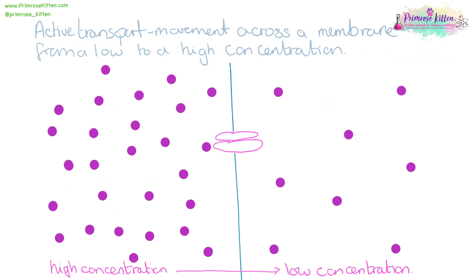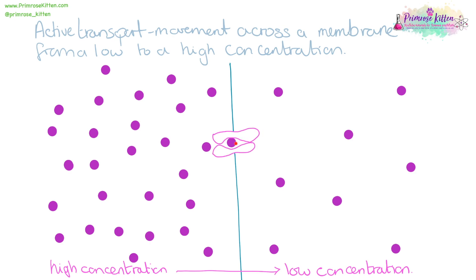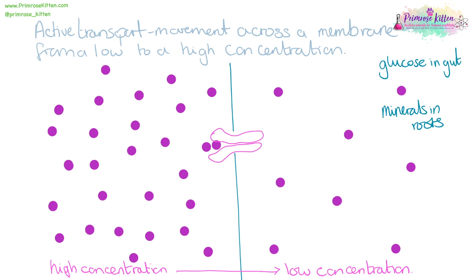Active transport is the movement across a membrane from a low concentration to a high concentration — against the concentration gradient. Our active transport channel is going to pick up something that it wants and move it through the channel to the other side. This could happen, for example, when we're talking about glucose in the gut or minerals in the roots.